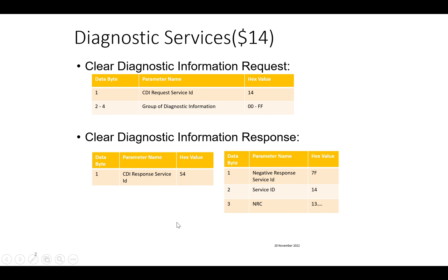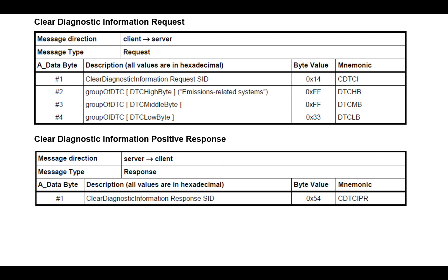For the positive response, 0x40 gets added to the service ID, giving 0x54. For a negative response, it is 0x7F followed by the service ID 0x14 followed by the NRC. For example, to clear DTCs with mask 0xFFFF33, the request is 0x14 0xFF 0xFF 0x33, and the positive response is 0x54.